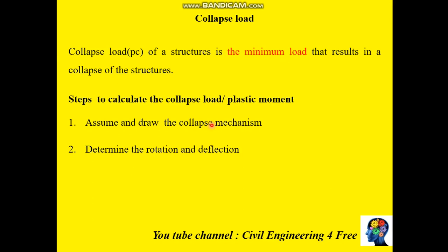Usually these plastic hinges form in the weaker member at restrained ends, which means at fixed supports and directly below concentrated loads. The collapsible load for any given structure is the minimum load that results in collapse of the structure. In a beam you only have one collapse mechanism, but if you have a frame the collapse mechanisms are usually three, so you have to select the mechanism that represents the minimum load.